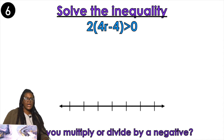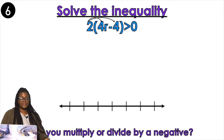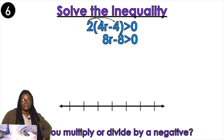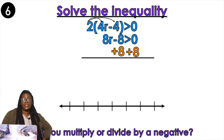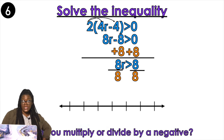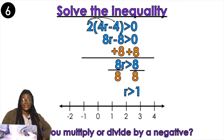We're going to distribute — you should pause the video and do this by yourself. But I can't make you do nothing. We distributed — we got 8r minus 8 is greater than 0. Now I'm going to get rid of my constant by adding 8 to both sides. Now we're going to divide by the coefficient. Was that a negative? No. Am I going to flip my symbol? No. R is greater than 1. Open circle or closed circle? Open.